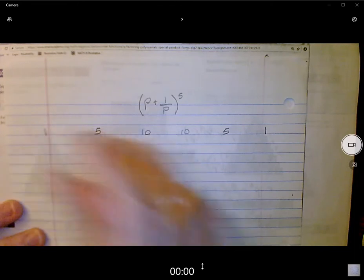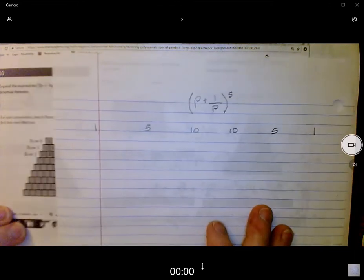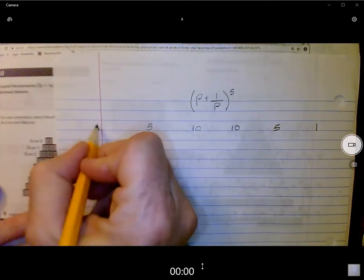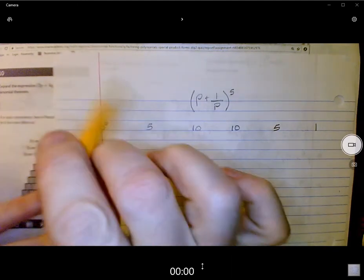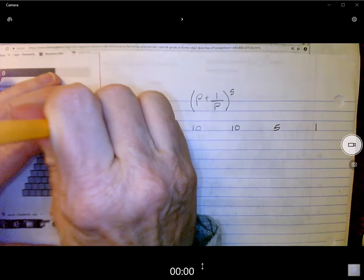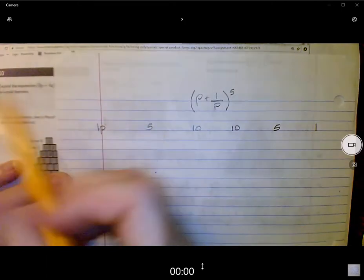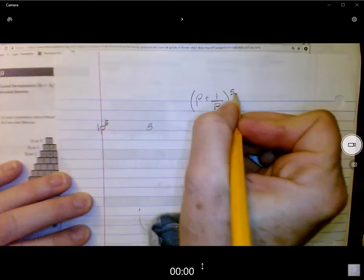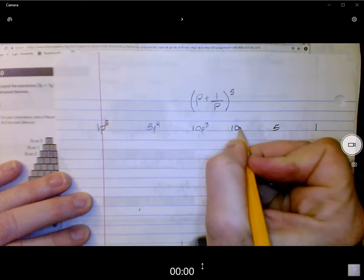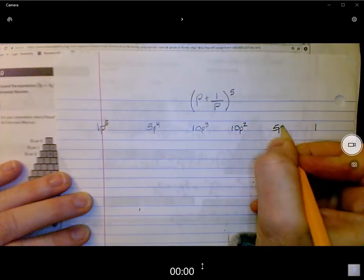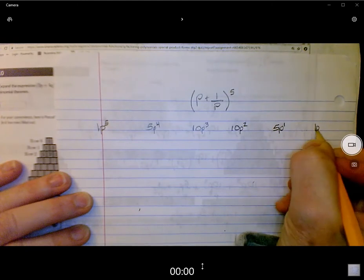So I'll have a... Let's try to get this someplace where my camera can focus. Okay, so P to the fifth, P to the fourth, P to the third, P to the second, P to the first and P to the zero.